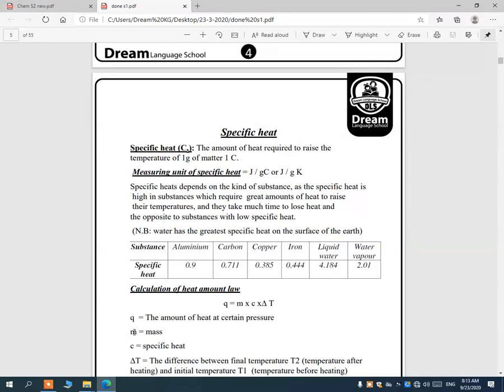For example, we have here an example of four metals and non-metals and compounds with their specific heats. Aluminum, for example, its specific heat is 0.9. Carbon is 0.711. Copper is 0.385. Iron is 0.444. Liquid water is 4.184. Water vapor is 2.01. That means that the specific heat differs according to the physical state of matter. As you see here, liquid water has a specific heat 4.18. Water vapor has a specific heat 2.01.